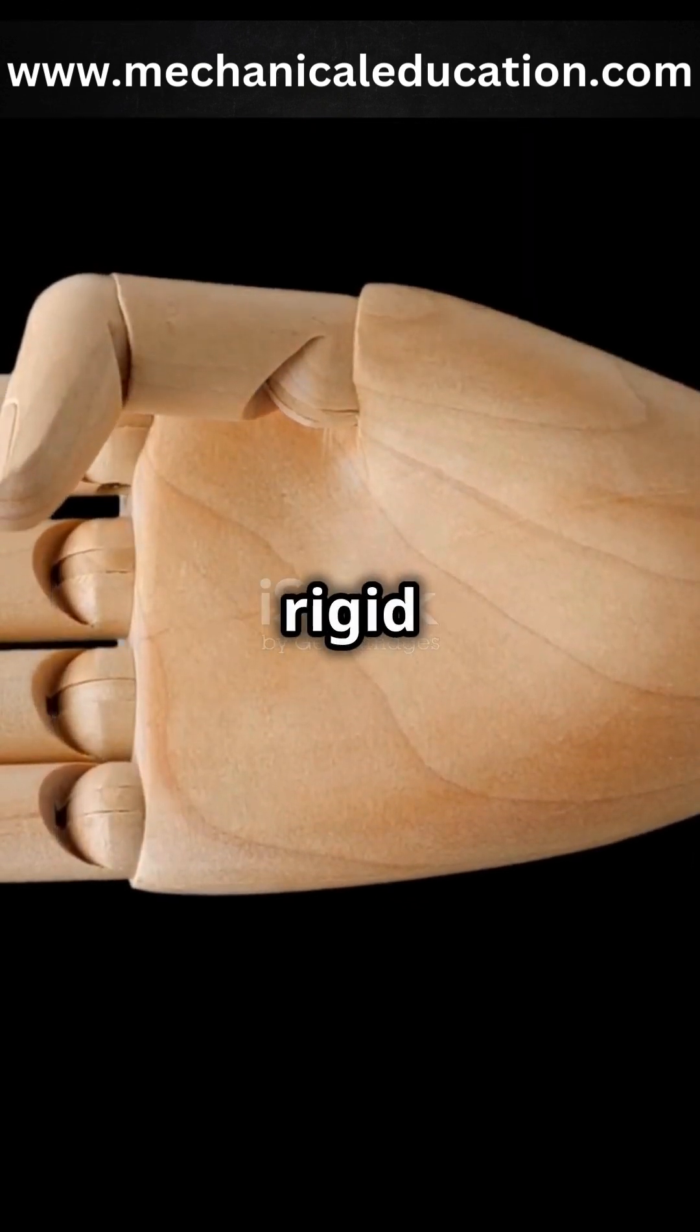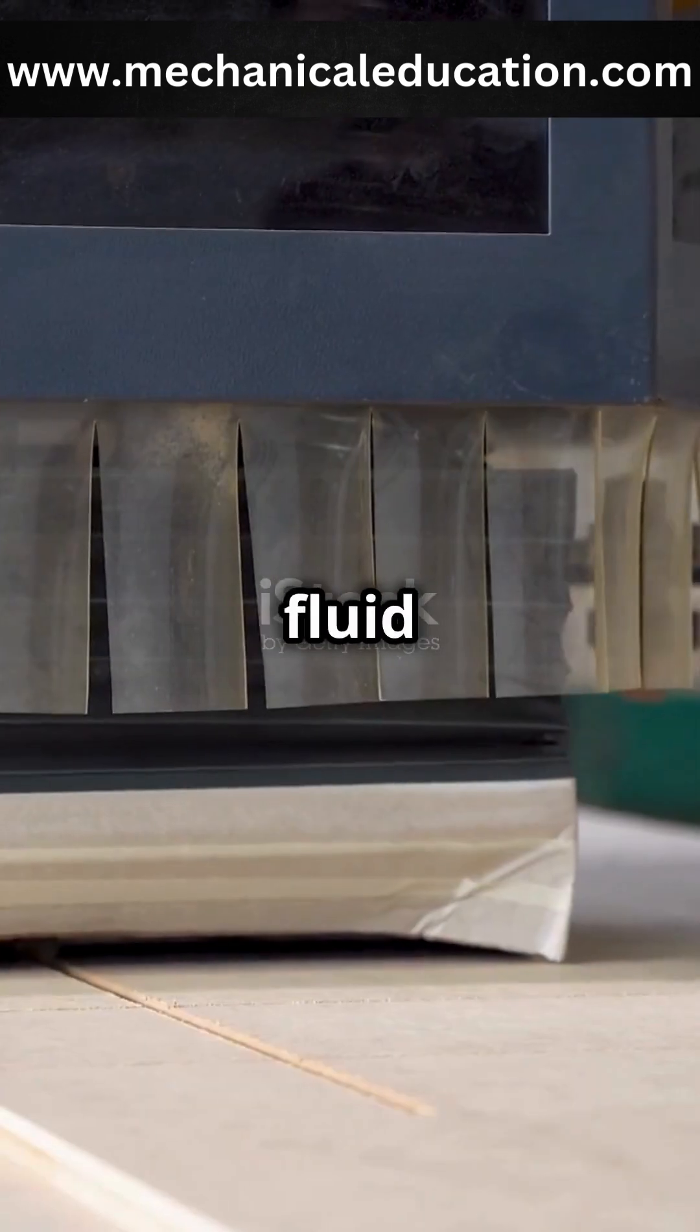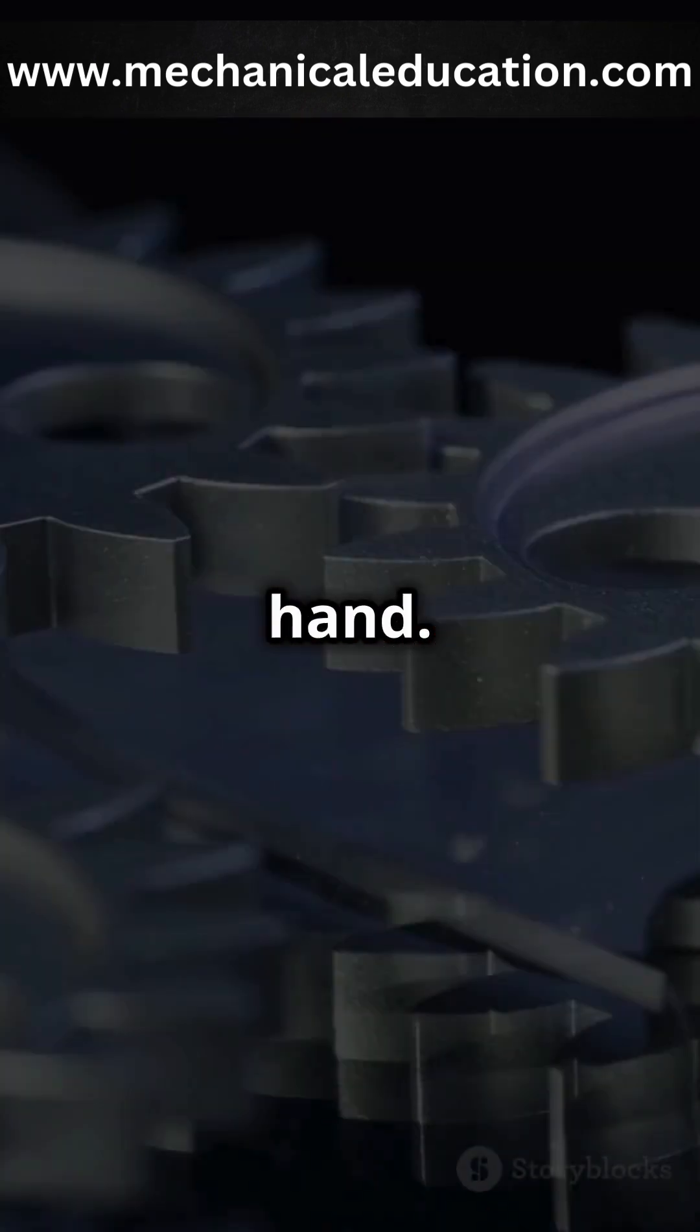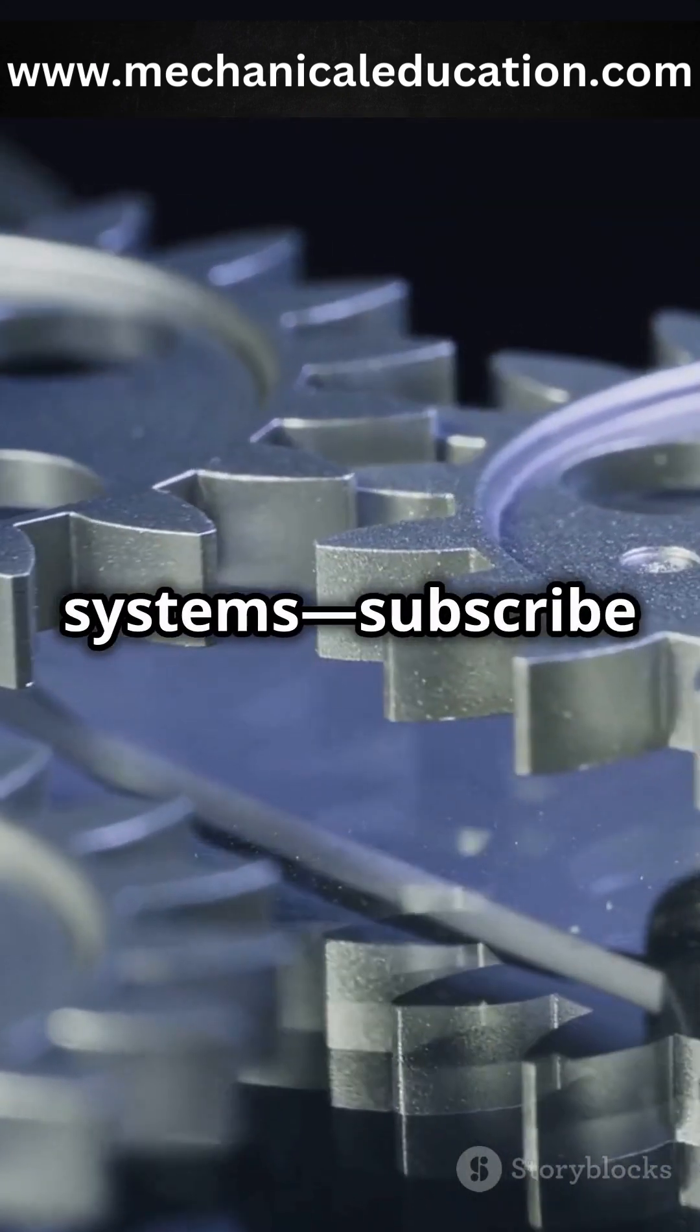To recap: flexible links adapt, rigid links deliver precision, and fluid links bring power. Each type has its place in engineering, depending on the task at hand. Learn more about mechanical systems—subscribe for more.